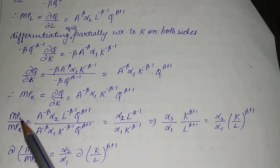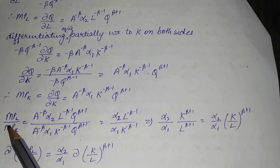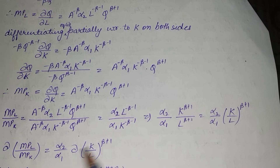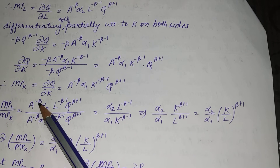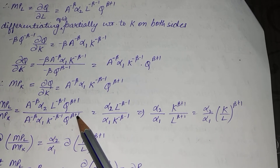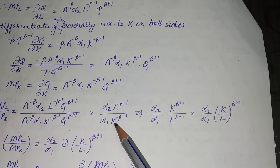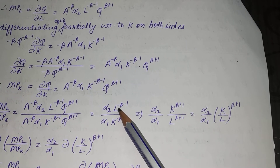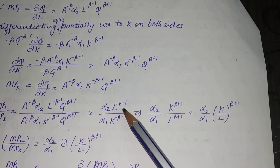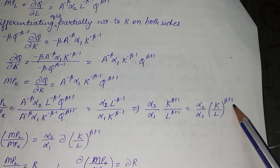Taking the ratio of both derived equations — marginal productivity of labor upon marginal productivity of capital — A^(−β) cancels out and Q^(β+1) cancels out, leaving α₂/α₁ · L^(−β−1)/K^(−β−1). When L is taken to the denominator and K to the numerator, both powers become positive and equal, so this simplifies to (α₂/α₁)·(K/L)^(β+1).